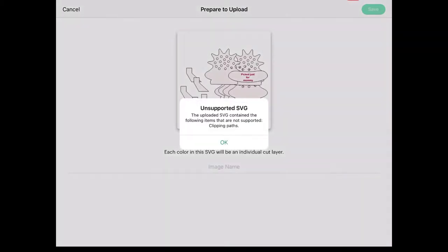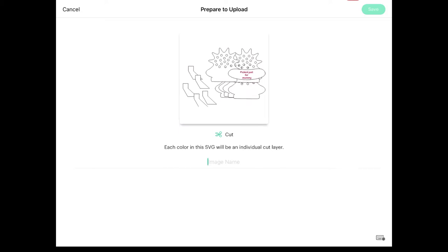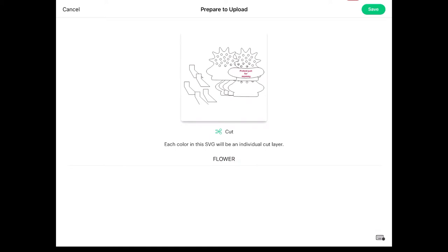Don't worry about the unsupported SVG message as it's just suggesting that the text file isn't supported, but it actually is. Once you're ready you can label your file. I've called mine flowerpot. Once you've done that, hit save.